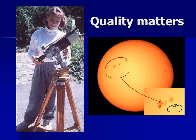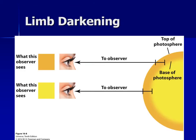Notice it's darker on the outer parts than in the middle — that also is a real effect. When you look at the sun, the edges look slightly darker, and that's called limb darkening. Limb is an astronomical term meaning the edge of something you're looking at, so the limb of the sun is the edge of the sun.